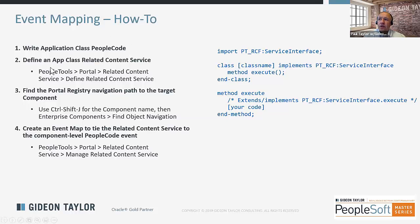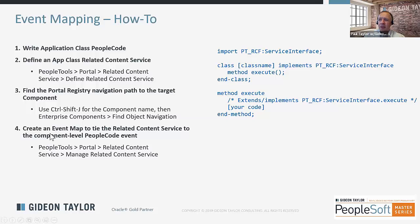Here is a quick run-through of how you're going to apply event mapping. You're going to write some application class PeopleCode that you want to take place in the event flow for a delivered component. You're going to define a related content service to host that, find the portal registry navigation for your target component, and create an event map that ties your related content service to a component-level PeopleCode event on your target component.